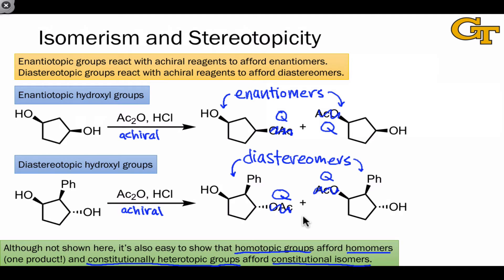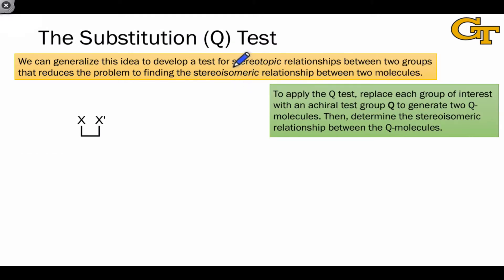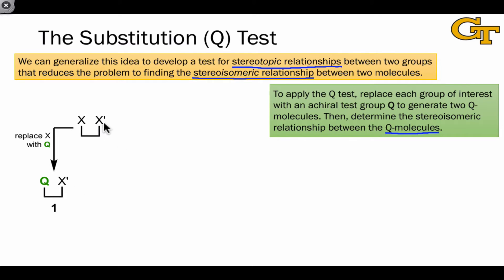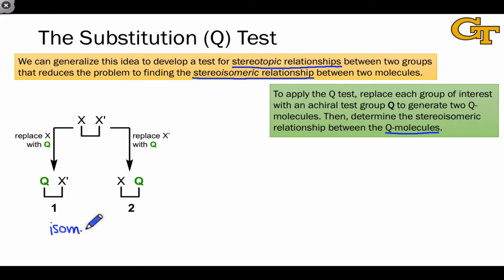These observations are the basis of the substitution test, and the general idea is to convert from the problem of finding a stereotopic relationship between two groups within one molecule to the problem of finding the stereoisomeric relationship between two molecules. We generate the two so-called Q molecules by replacing each group of interest with Q in turn. In this hypothetical example, replacing X with Q leads to compound 1, and replacing the internally identical but possibly heterotopic group X' with Q leads to compound 2. We then determine the isomeric relationship between 1 and 2 to deduce the stereotopic relationship between X and X' in the original molecule.